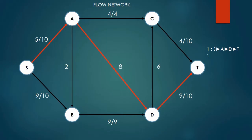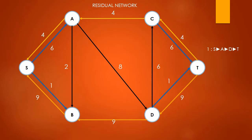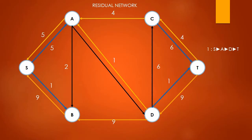Now we update the flow along the path, adding 1 to the flow of each edge. Edge S to A becomes 5 out of 10, edge A to D becomes 1 out of 8, and edge D to T becomes 10 out of 10 — so it's completely full. Now we update the residual network. We can now push forward 5 from edge S to A. For edge A to D, we are pushing back 1, so we can only push forward 7. And for edge D to T, we are pushing back 10, so we can't push anything forward.